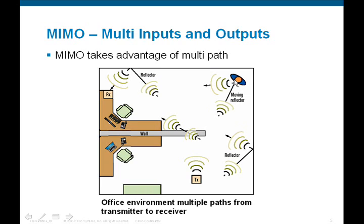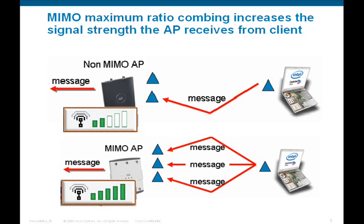The AP-1250 takes advantage of those reflections, commonly called multipath, in order to increase the signal strength. On the receive side, the AP-1240 can only receive one copy of that signal and decipher it at a time.